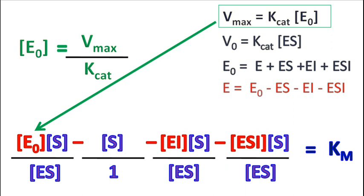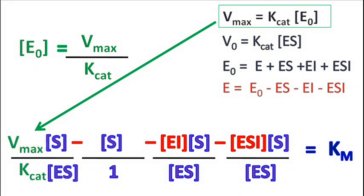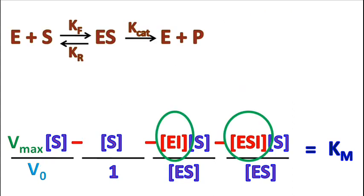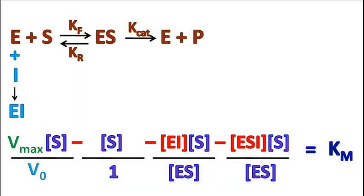The term E₀ in the equation can be substituted as Vmax divided by kcat, and the product of kcat and ES is v₀. Now let's derive the equation for the terms EI and ESI. E plus I forms EI, and the rate constant for this reaction is KI.